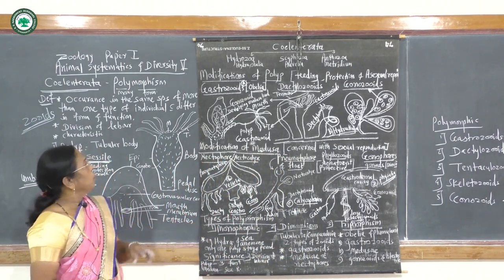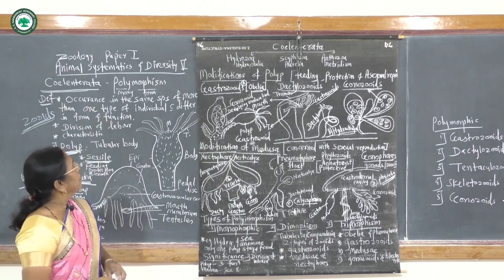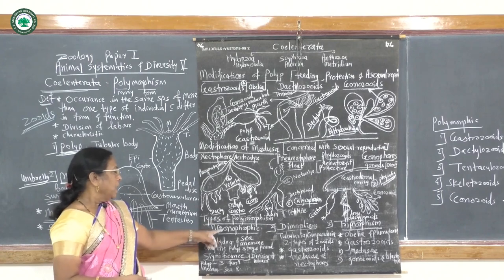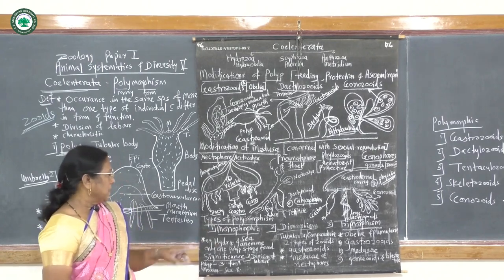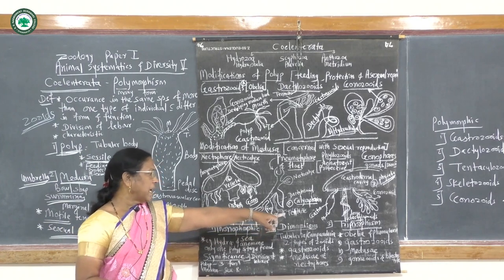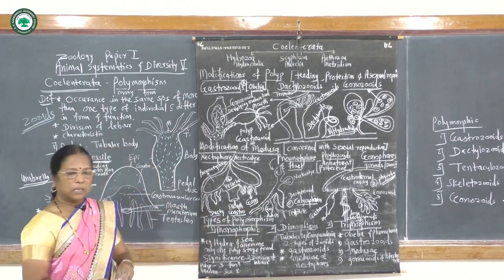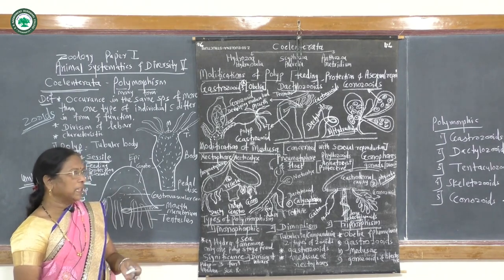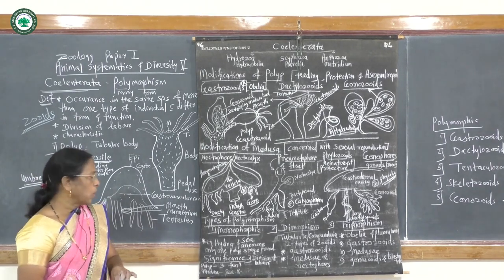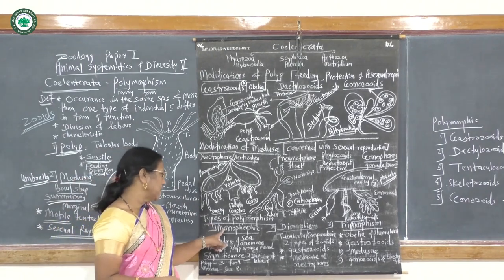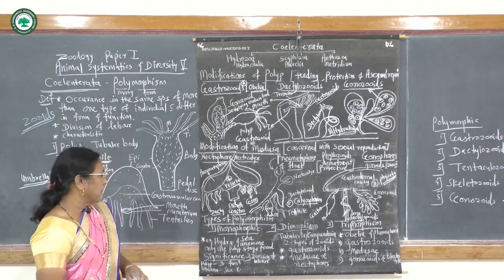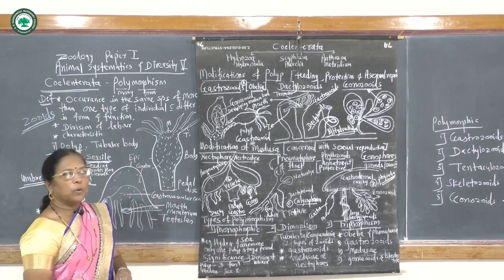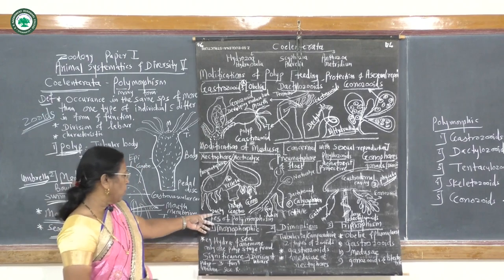Next topic from Coelenterata is the types of polymorphism. There are three types: monomorphic, dimorphic, and trimorphic, or many forms. When more than three to four forms come together they are also called polymorphic forms. Monomorphic — example Hydra and sea anemone — only one polyp stage is found, hence it is called monomorphic form.